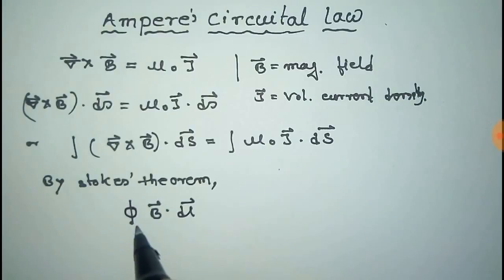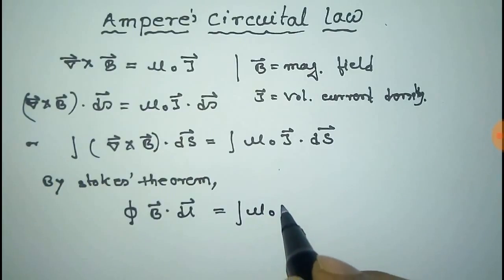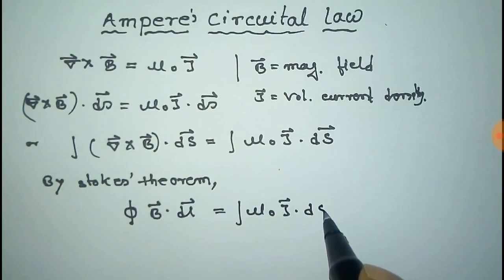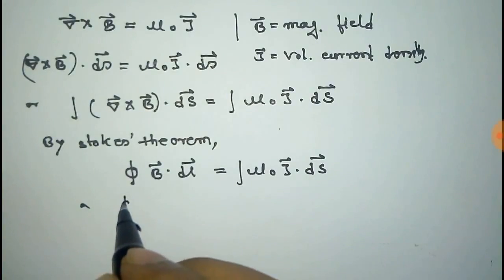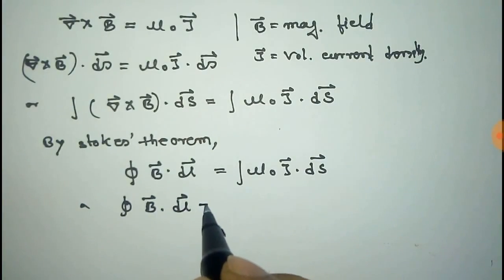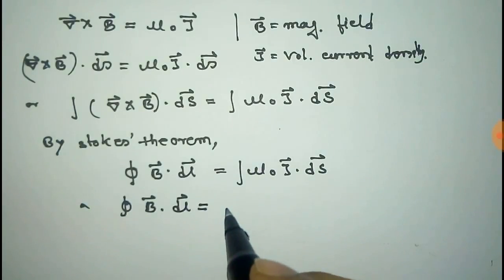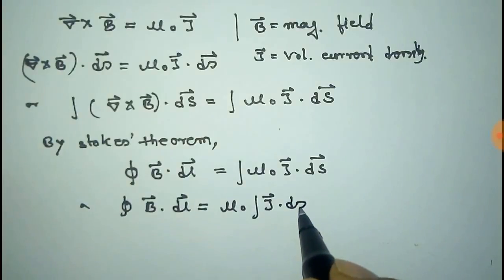This is the Stokes theorem that we have applied. That is equal to integral μ₀ J vector dot ds. Here μ₀ is a constant so it comes out of the integral and the remaining is J dot ds vector.